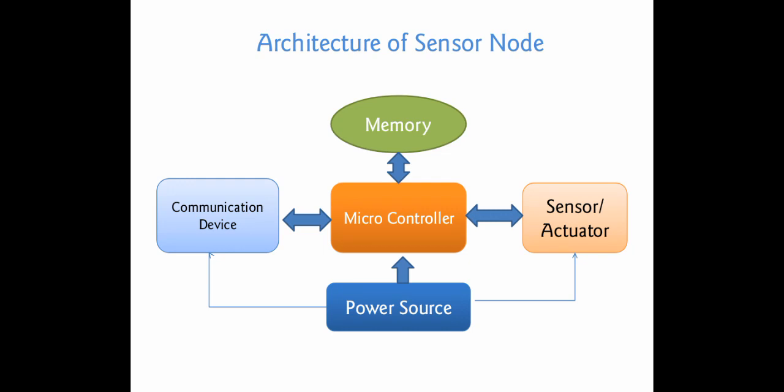Coming to the heart — the CPU of a sensor node — it is a device which is used to perform and compute tasks, and the functionality of each and every component is controlled by the heart of a sensor node, which is nothing but the microcontroller. We have many types of devices: microprocessor, microcontroller, DSP processors, FPGA, and ASIC devices.